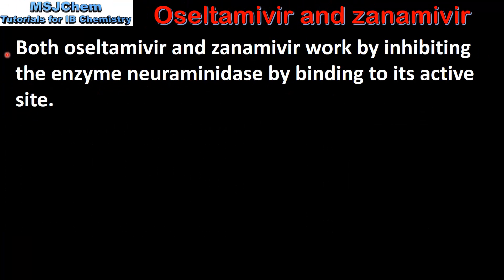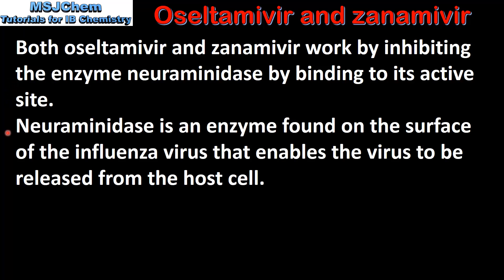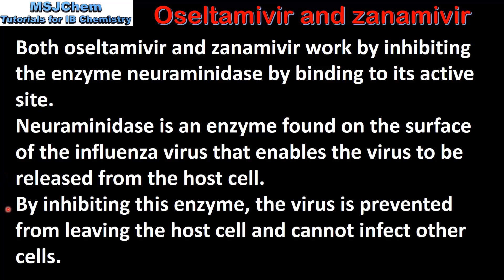Both Oseltamivir and Zanamivir work by inhibiting the enzyme neuraminidase by binding to its active site. Neuraminidase is an enzyme found on the surface of the influenza virus that enables the virus to be released from the host cell. By inhibiting this enzyme, the virus is prevented from leaving the host cell and cannot infect other cells.